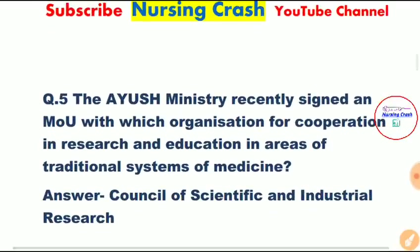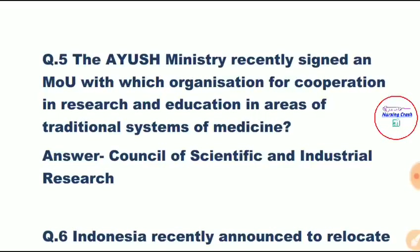Question number five: The AYUSH Ministry recently signed an MOU with which organization for cooperation in research and education in the area of traditional systems of medicine? Correct answer is Council of Scientific and Industrial Research. The Union Ministry of AYUSH — Ayurveda, Yoga and Naturopathy, Unani, Siddha, and Homeopathy — and CSIR on April 22 signed a Memorandum of Understanding for cooperation in research and education in traditional systems of medicine and its integration with modern science.